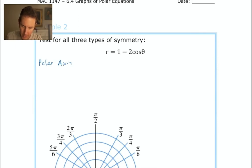Polar axis symmetry - we test by letting θ = -θ. I'm not going to put parentheses around them; I'll tell you why in a minute. Making that substitution: r = 1 - 2cos(-θ). Here we've made the substitution.